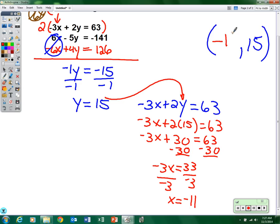I'm done. So the solution to this system of equations is negative 11, 15. Again, if we would graph these two equations, that's where they would cross each other. That is the conclusion of Advanced Algebra Mastery Quiz Number 5.